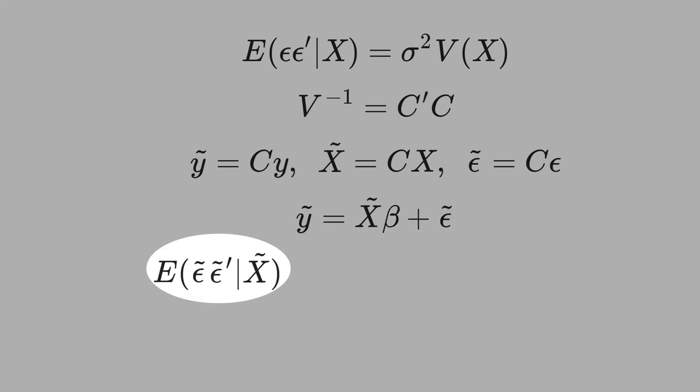Now, let's compute the variance of the error tilde, conditional to X tilde. We get C times sigma-square times V times C-transpose. We treat sigma-square as a constant, and the sigma-square goes outside. And what is this term here? Identity matrix. We prove that with this transformation, we get the homoscedasticity.